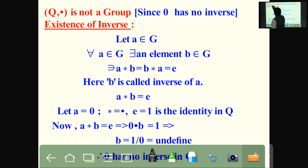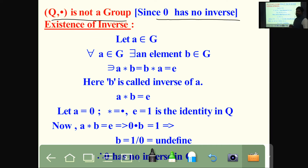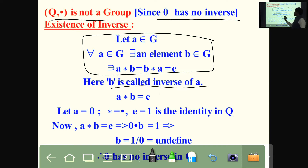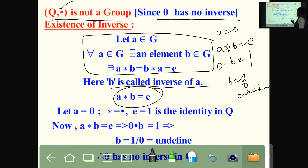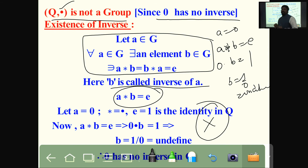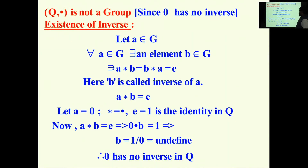Coming to Q under dot (multiplication): Q dot is not a group because only one element has no inverse — that is 0. Taking A equal to 0, A dot B equals 1 gives 0 times B equals 1, so B equals 1 by 0, which is undefined. Therefore 0 has no inverse in Q, and that is the only reason Q under multiplication is not a group.